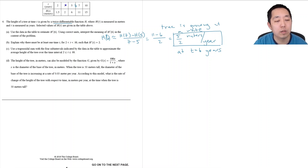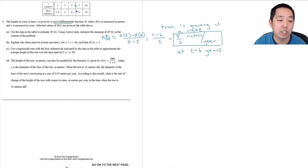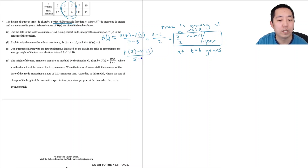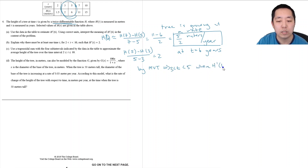I need to find a secant line slope where the slope is 2, and that's by the Mean Value Theorem. The Mean Value Theorem says there's a tangent line slope somewhere, as long as the function is continuous and differentiable — and that's true because it's twice differentiable. So h of 5 minus h of 3 divided by 5 minus 3 equals 2. By the Mean Value Theorem, that implies there's a time t between 3 and 5 where h prime of t equals 2.